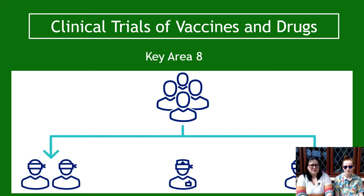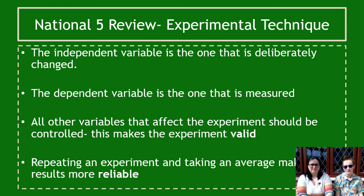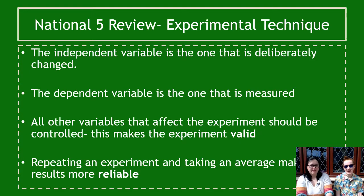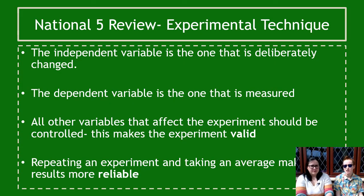In terms of stuff you should have learned at National 5: the independent variable is the one that's deliberately changed — it's the one you control. The dependent variable is the one that's measured; it's dependent on the independent variable. All other variables must be controlled, meaning we only change one variable per experiment to keep it valid. If you change both temperature and time, for example, that's two variables changed and the experiment is no longer valid.